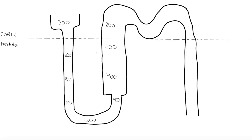On this diagram we've got the loop of Henle. At the top we've got the proximal convoluted tubule, the distal convoluted tubule, and the collecting duct. The diagram is separated into two areas: we've got the cortex at the top, which is where the two convoluted tubules are, and then the loop of Henle is in the medulla.